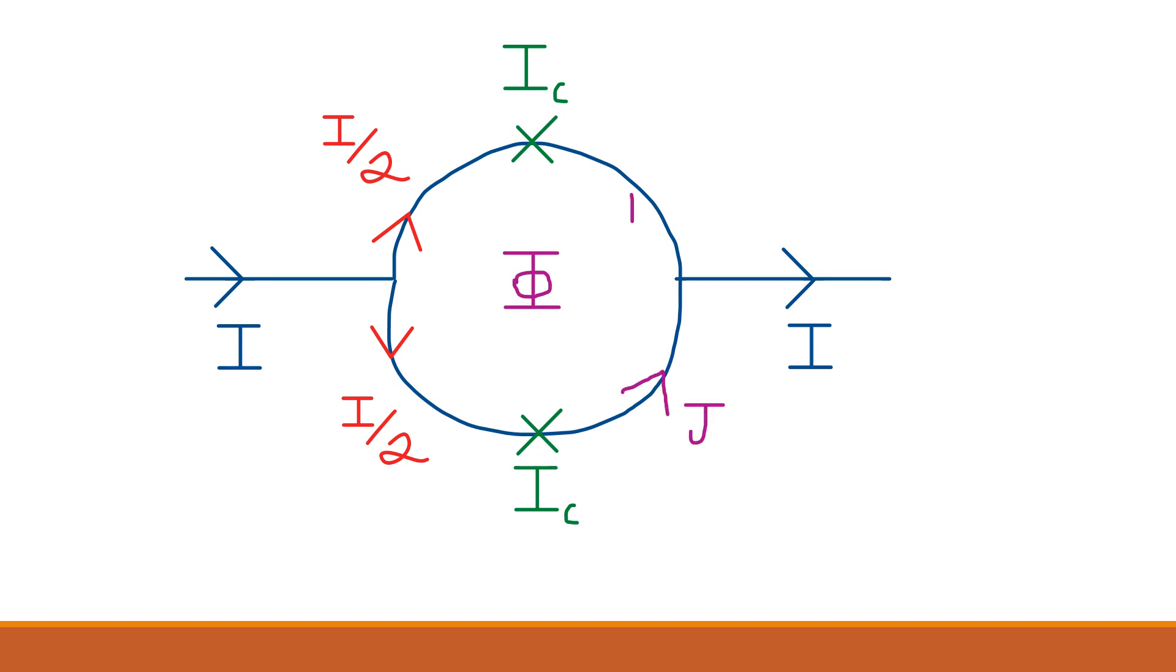By applying a magnetic flux through the device, we establish a phase difference between the opposite sides of the ring, because as we can see, on this side of the ring, half the current is added to the current caused by the flux, whereas on this side, half the current is opposed by the current due to the flux.